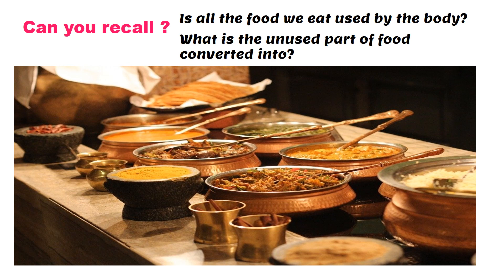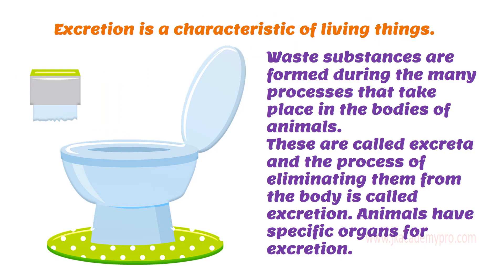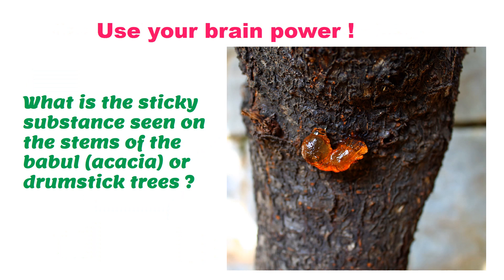We consume a lot of food — what happens to the unused part? Waste substances formed during the many processes in the bodies of animals, including human beings, are called excreta. The body takes all the nutrients and the leftover part of the food is excreta, which is eliminated from the body. This process is called excretion, and all animals have specific organs for excretion.